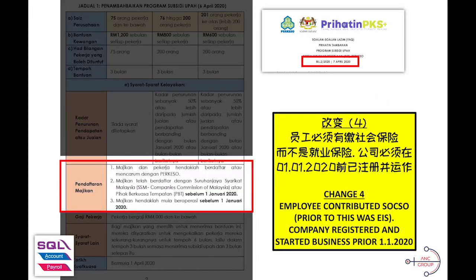Number four. Employees must have already registered with SOCSO and also have been paying SOCSO. If you are a new business incorporation, this is bad news for you. Newly incorporated companies may not be able to claim this Wage Subsidy Program. It is for companies incorporated before 1 January 2020 and already operating before January 2020.